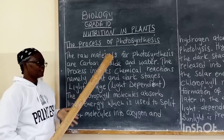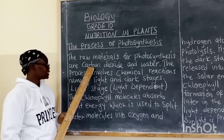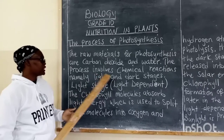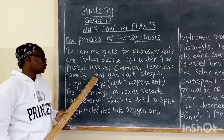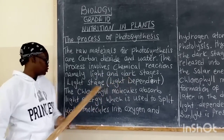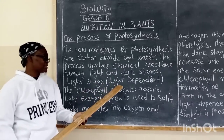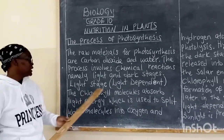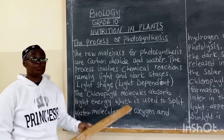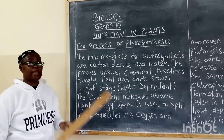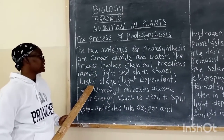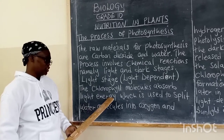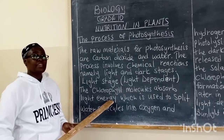The process of photosynthesis involves many chemical reactions. We have already said that the important raw materials needed are carbon dioxide and water. The chemical reactions are divided into two: the light stage and the dark stage. We start with the light stage, which can also be referred to as the light dependent stage or light reaction stage.